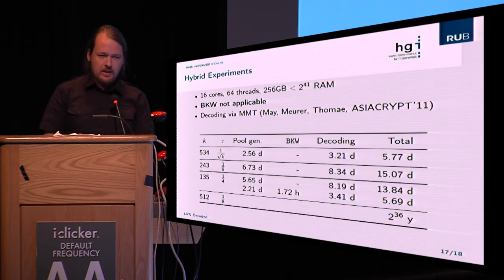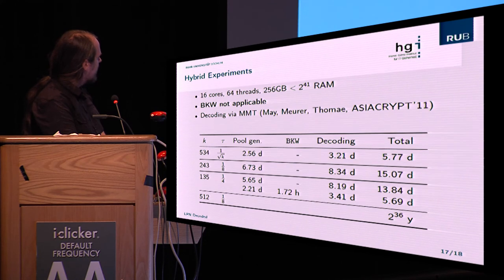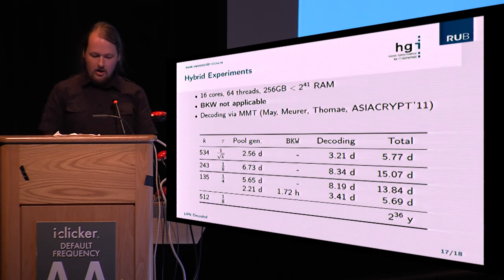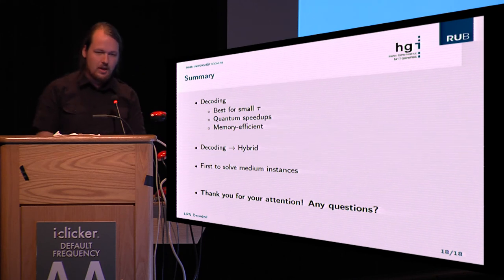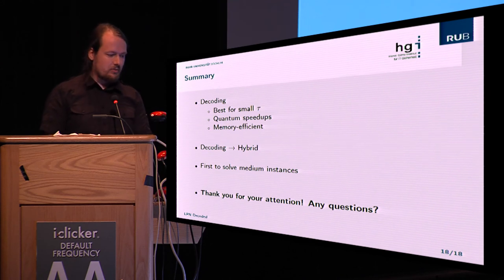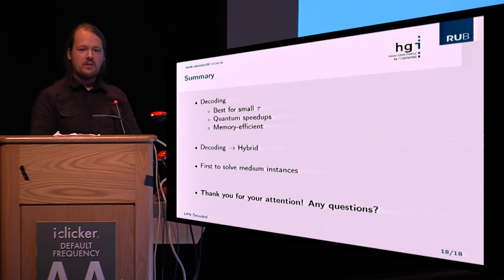Extrapolating from our experiments: the famous instance k = 512 with τ = 1/8 would take approximately 2^36 years on our PC, so we assume it remains secure classically. In summary: the decoding approach is good for small τ, allows quantum speedups, and is memory-efficient, meaning it's actually applicable. The hybrid algorithm mixes decoding and BKW to make things faster and is ideal for experiments. This allowed us for the first time to solve medium-sized LPN instances like the k = 500 range, which was not possible before.